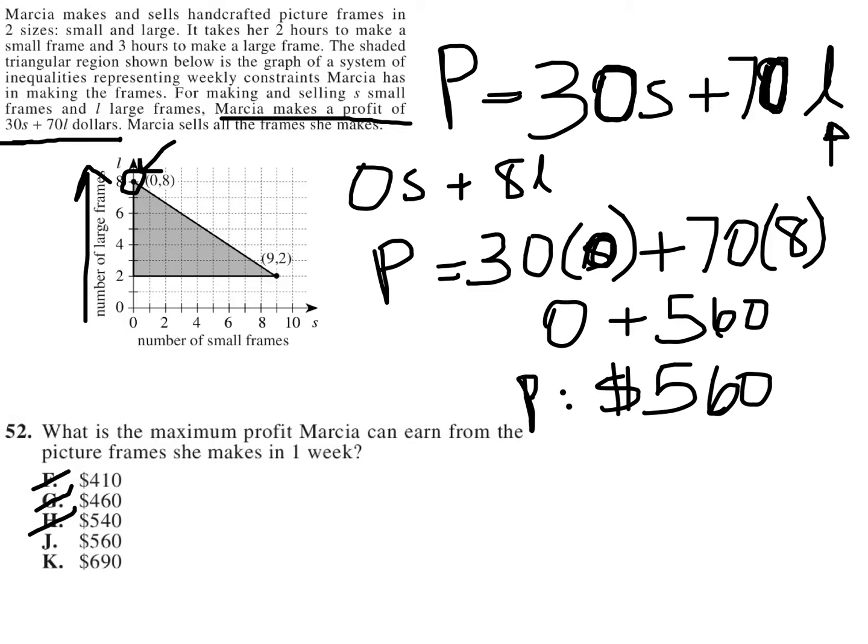she would have to make twice as many small frames as large frames to make this not the best answer. And the reason why I say that is because $70 is more than 2 times bigger than $30.